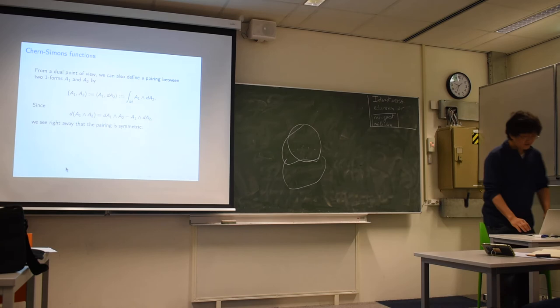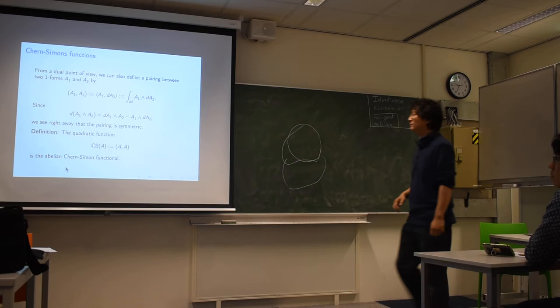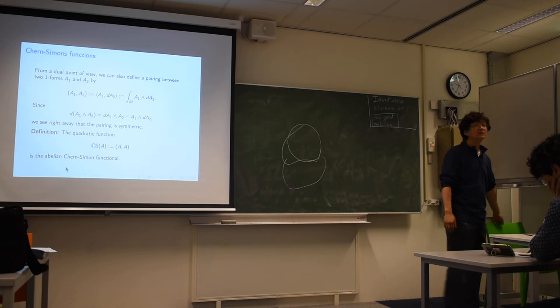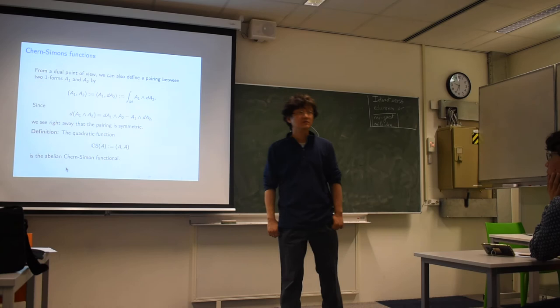This pairing, if you evaluate it on a single one-form A, is exactly the Abelian Chern-Simons functional. Sometimes people take various k-multiples of this as well, but this is the basic one. You just take A ∧ dA and integrate it over the manifold. That's the simplest case of the Chern-Simons functional.